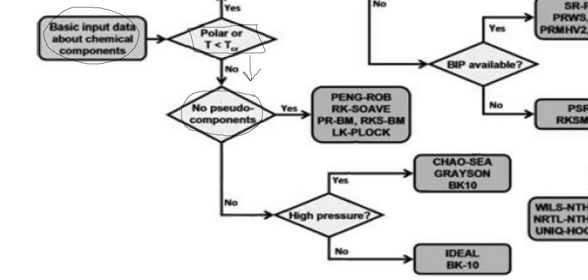Once we have verified that the system is non-polar, we check whether pseudo components are present or not. Pseudo components are hypothetical components — the question is whether you are selecting real components existing in the Aspen Plus library or hypothetical components. If no pseudo components are present, then we select Peng-Robinson, SRK, Peng-Robinson extensions, or Lee-Kesler-Plöcker equations.